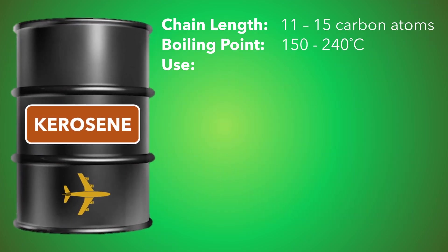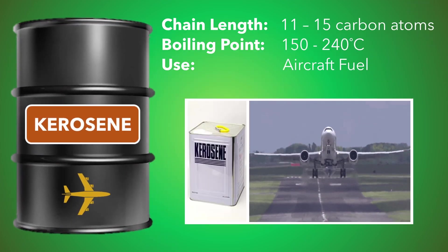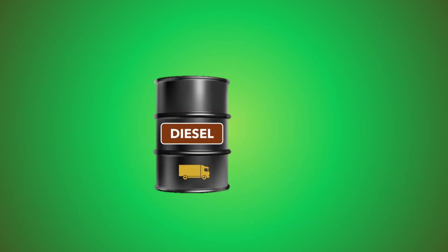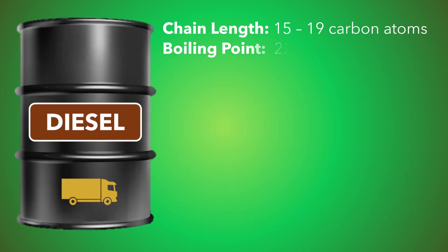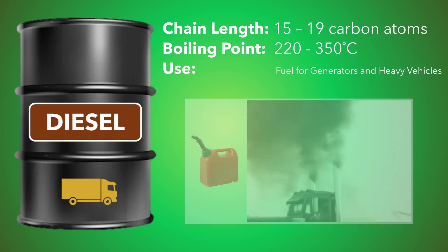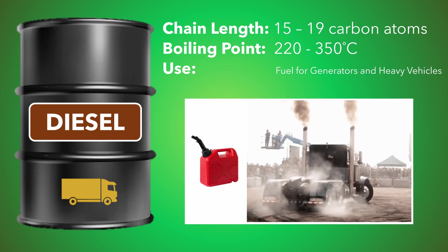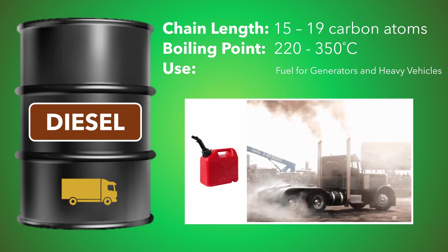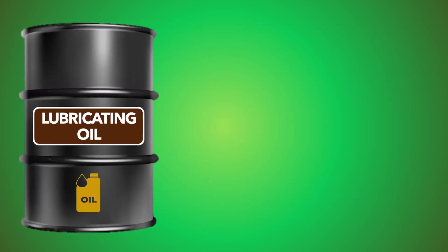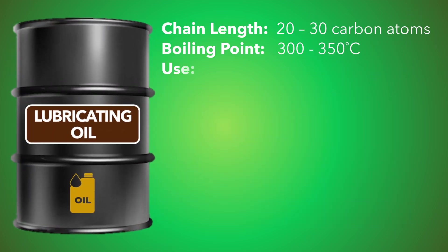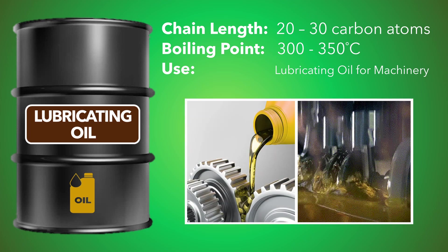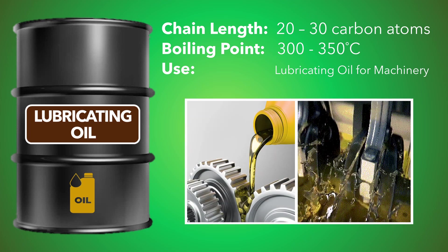Kerosene is used as aircraft fuel. Diesel is used as fuel for generators or heavy vehicles like trucks, buses or trains. Lubricating oil is used to reduce friction in engines or machinery.